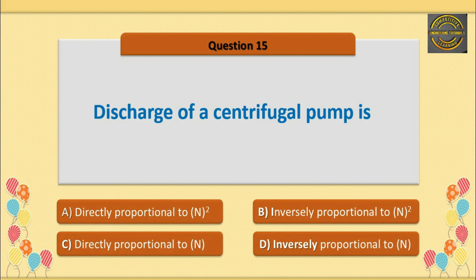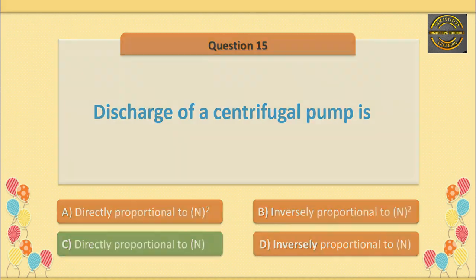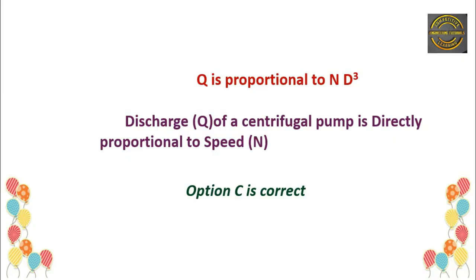Discharge of a centrifugal pump is also directly proportional to the speed N. Explanation: Discharge Q is directly proportional to speed × diameter cubed. So discharge of a centrifugal pump is directly proportional to speed N. Option C is correct.